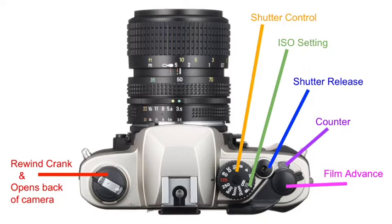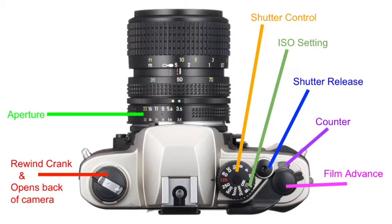Now we're going to look at the lens of the camera. The lens will contain two to three different dials. Two of the dials you will find on every lens, while the third may not be present depending on what kind of lens is attached. The dial closest to the body of the camera controls the aperture — a series of numbers ranging from 2.8 to 22. The aperture determines the intensity of light entering the camera and also controls the depth of field. The number under the dot is what aperture the camera is set to.